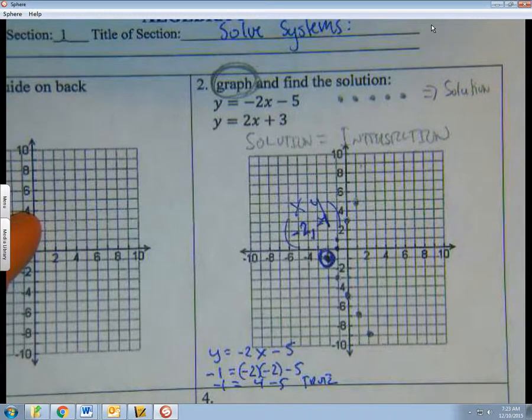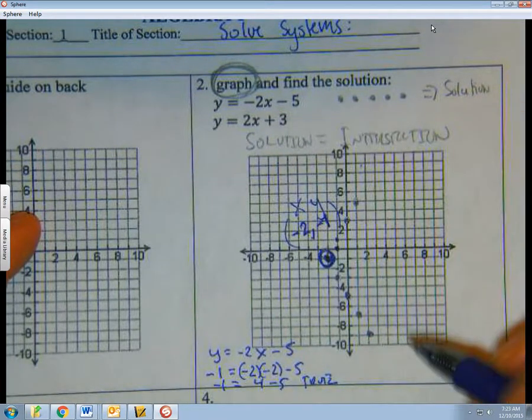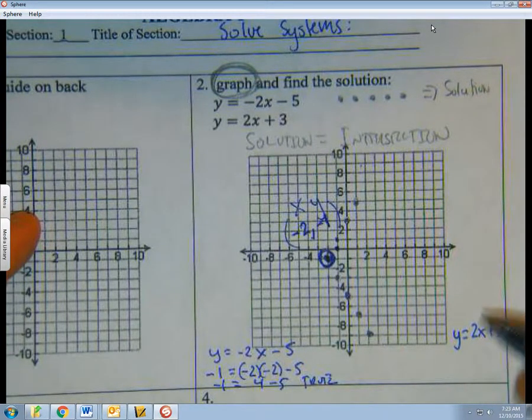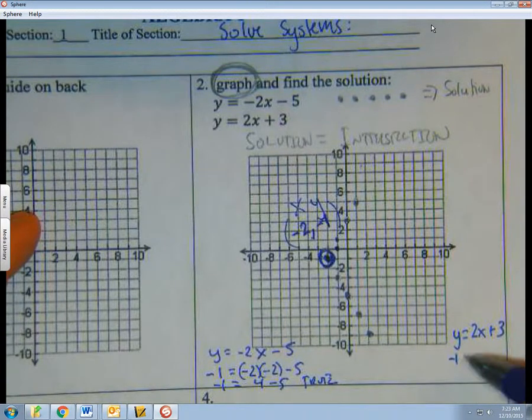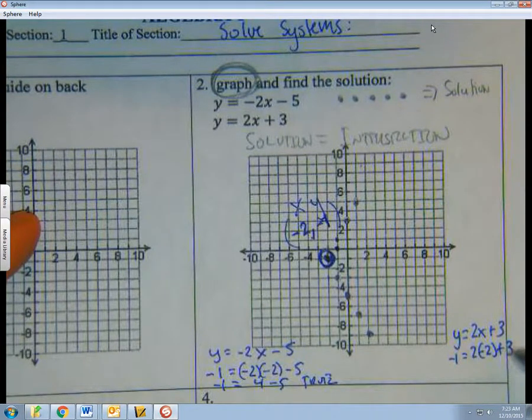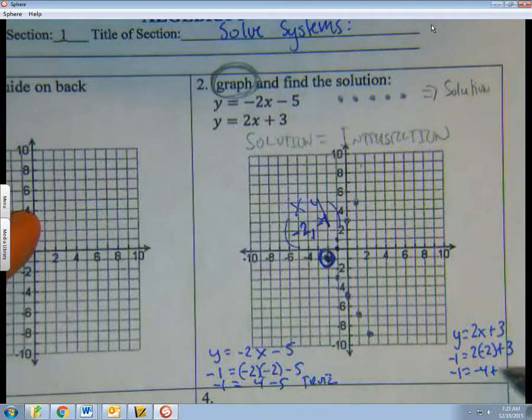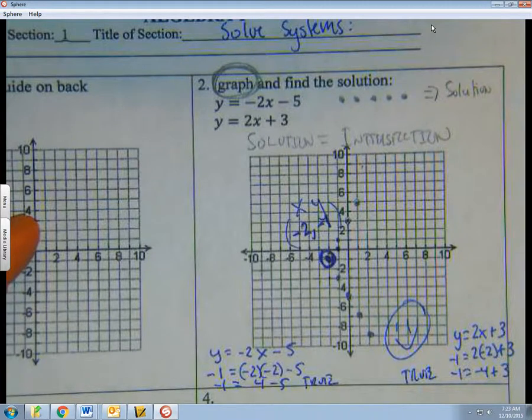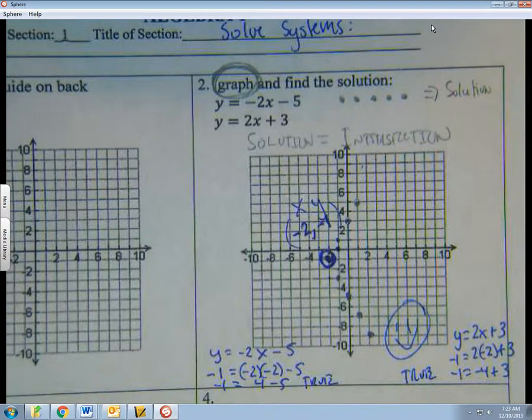Alright, same thing with this guy. Let's plug it in for that. y equals 2x plus 3. Throw the minus 1 in for y. I get 2 times negative 2 plus 3. Minus 1 is minus 4 plus 3. Again, I should be able to see that that is true. Okay, so there you go. There's my check. Smiley face. It's all good. It works. So congratulations, you just solved a system of equations graphically, and there's other methods we'll get to as well.